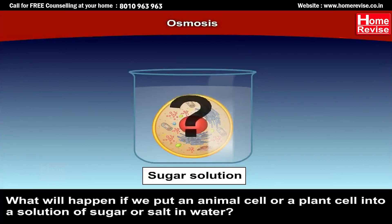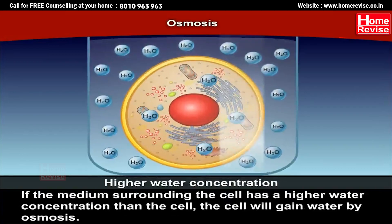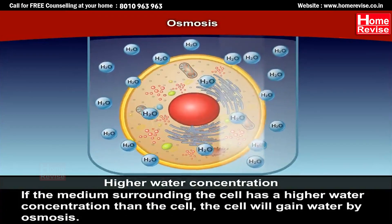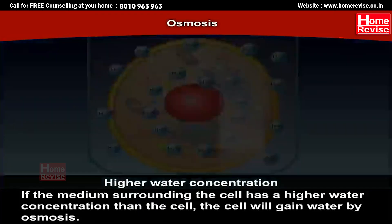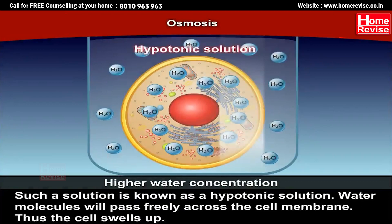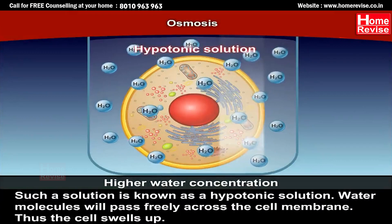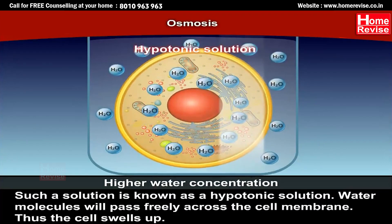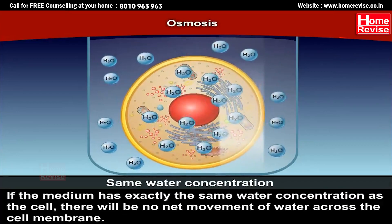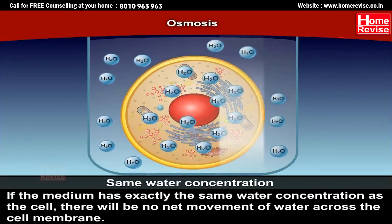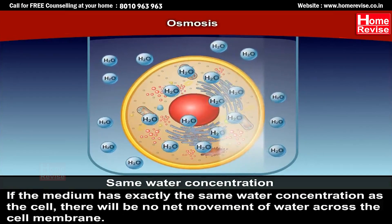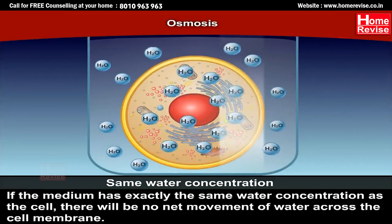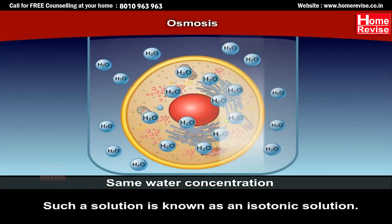One of three things could happen. First, if the medium surrounding the cell has a higher water concentration than the cell, the cell will gain water by osmosis. Such a solution is known as a hypotonic solution — water molecules will pass freely across the cell membrane and the cell swells up. Second, if the medium has exactly the same water concentration as the cell, there will be no net movement of water across the cell membrane. Such a solution is known as an isotonic solution.